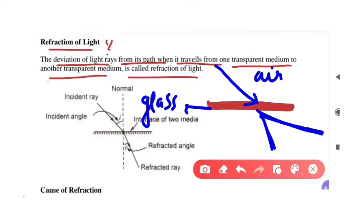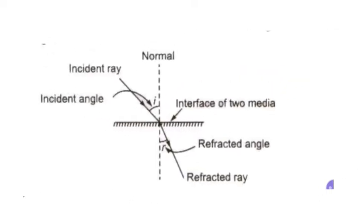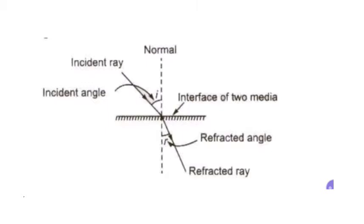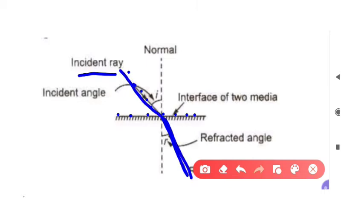This whole phenomenon is called refraction of light. Here you can see a diagram on your screen — that diagram shows refraction of light. You can see there is a surface shown by a blue line. Here you can see the incident light ray, and here you can see that it is bent. This bending process is refraction of light.